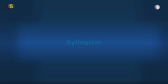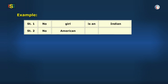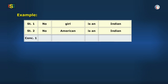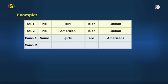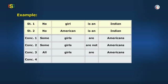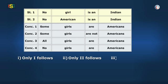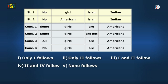Now have this next question follow the same guidelines. The statements are: no girl is an Indian, no American is an Indian. Conclusions: one - some girls are Americans, two - some girls are not Americans, three - all girls are Americans, four - no girls are Americans. Give the answer from these options: one - only one follows, two - only two follows, three - one and two follow, four - two and four follow, five - none follows. Go on Vidya.